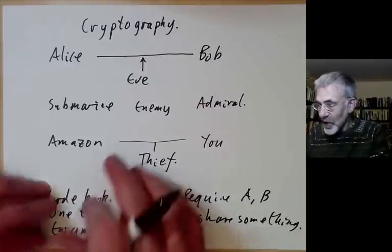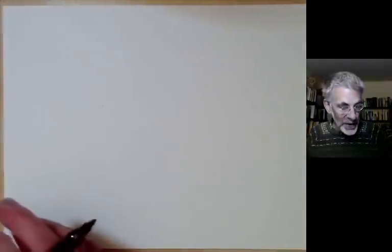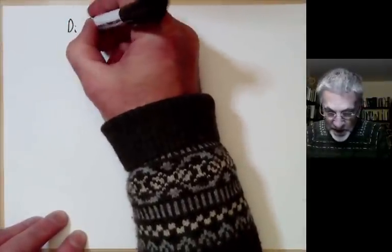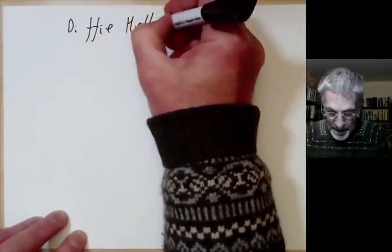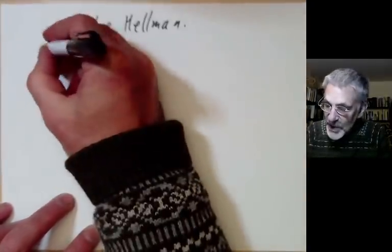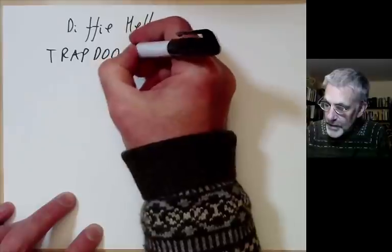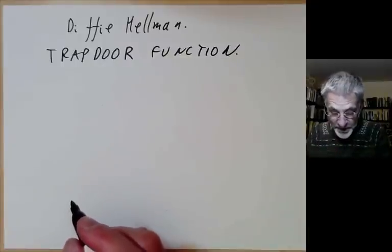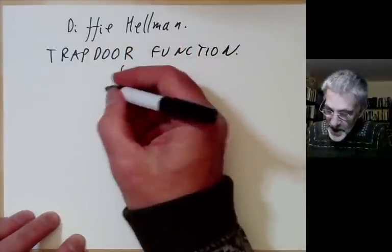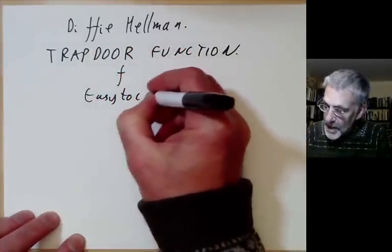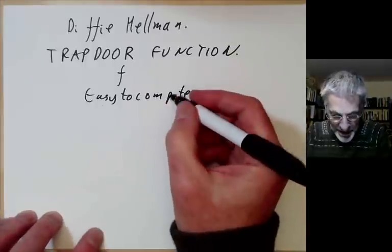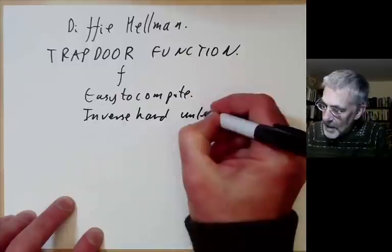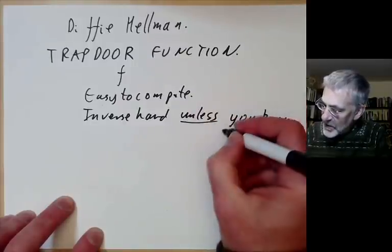So we have this problem: how can you communicate securely even if someone can intercept all your communications? A provisional method was worked out by Diffie and Hellman using something called a trapdoor function.